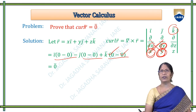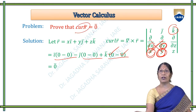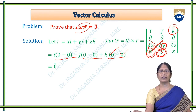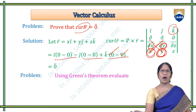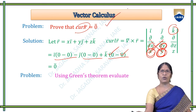We must be careful: finding curl gives a result in vectors, whereas divergence (dot product) gives a result in scalars. If the curl result is zero, we say the vector field is irrotational. In vector calculus, the three main integral theorems are Gauss divergence theorem, Stokes theorem, and Green's theorem. We will now solve a problem using Green's theorem.